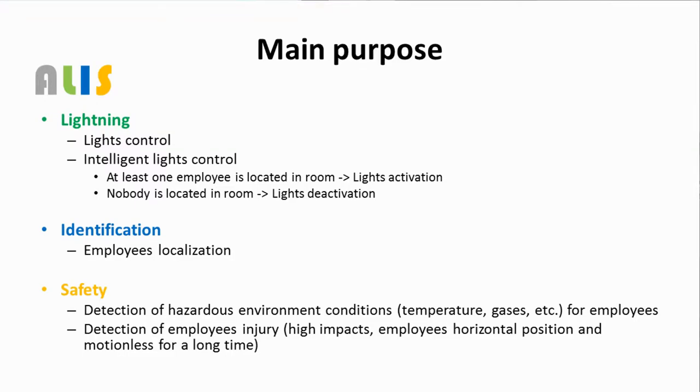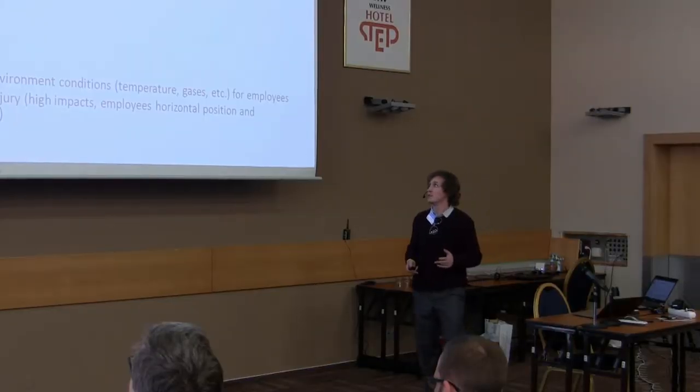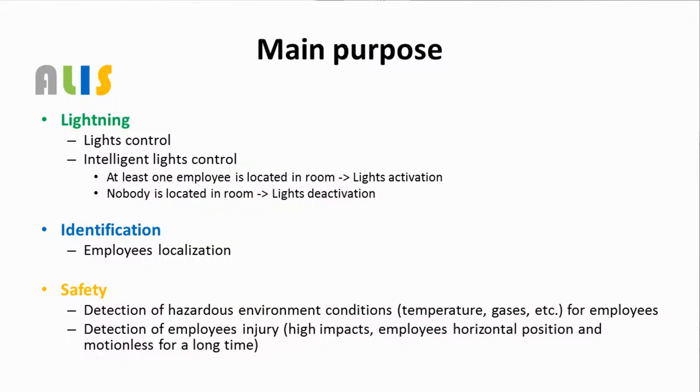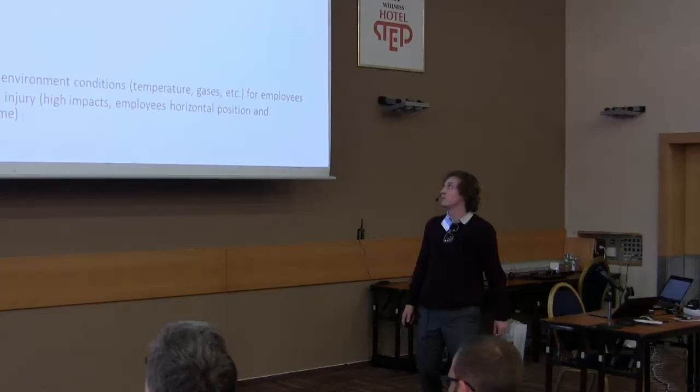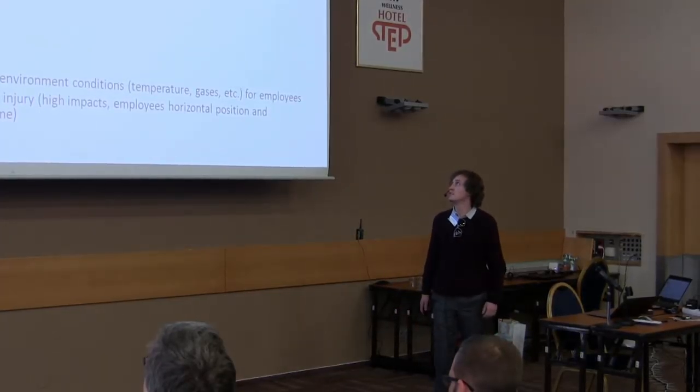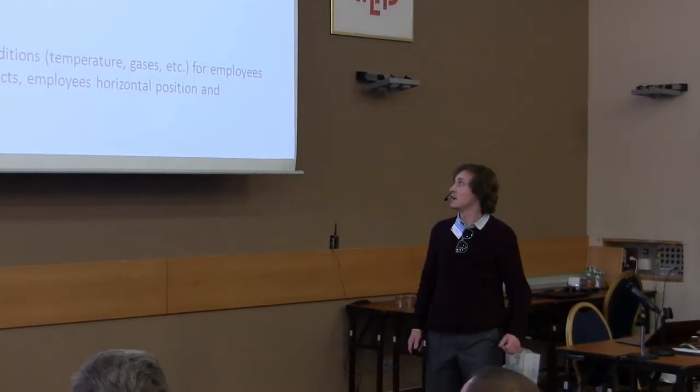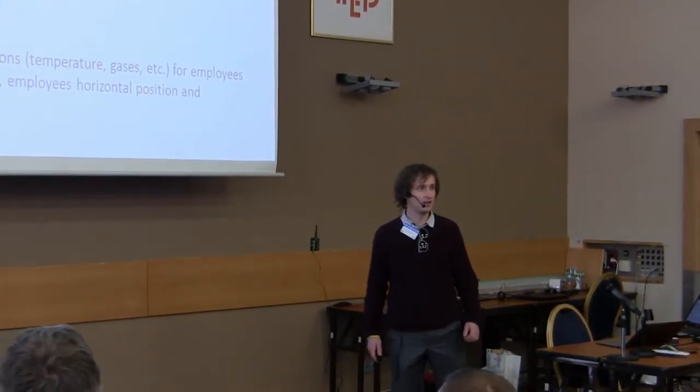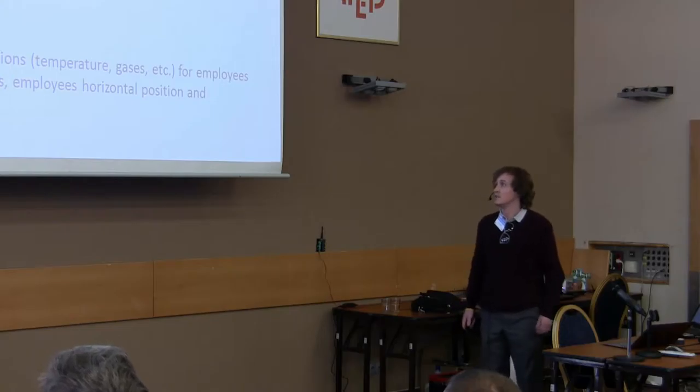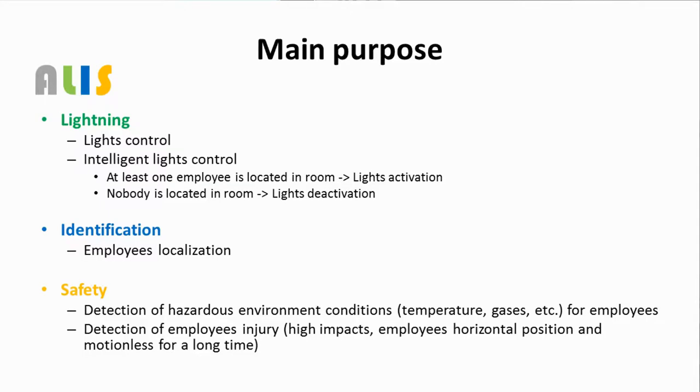The main purpose of ELIS. The ELIS system is composed of three main parts. The first part deals with lights control and intelligent lights control. When at least one employee is located in the room, then lights are activated. When nobody is located in the room, then lights are deactivated.